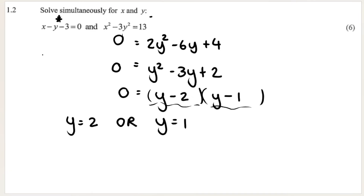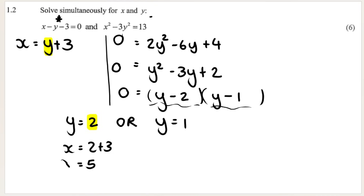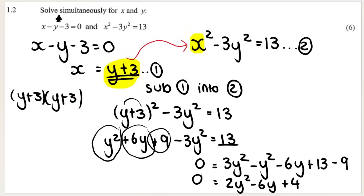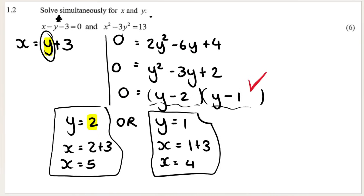Because we have two solutions for y, we'll have two solutions for x. Using x equals y plus 3: if y equals 2, x equals 2 plus 3 equals 5; if y equals 1, x equals 1 plus 3 equals 4. So we have two answers for x and two answers for y. Marks are awarded for isolating x, substituting, putting it in standard form, factorizing, both y values, and both x values.